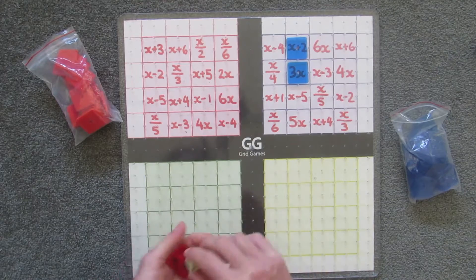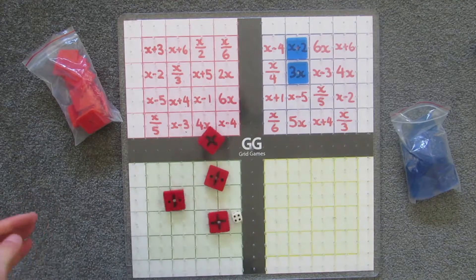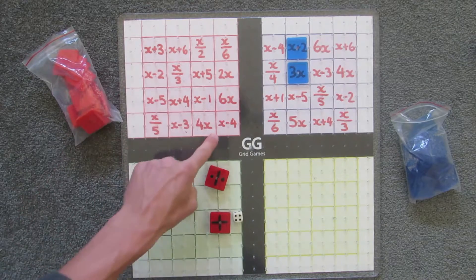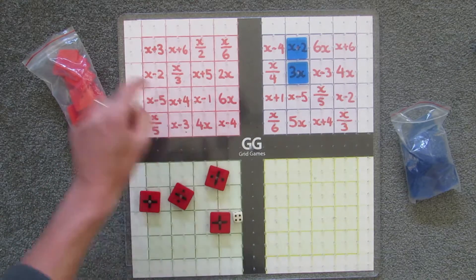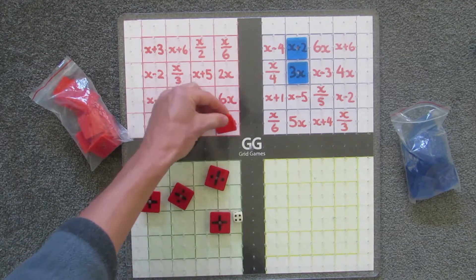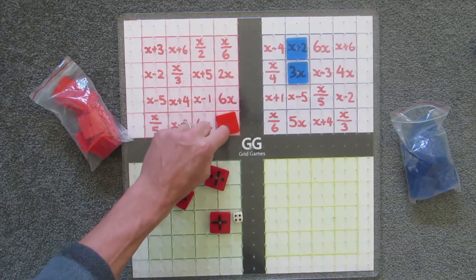So we'll go a few more just so you get the idea. So the next roll, plus 4. So if you have x minus 4, the plus 4 will undo that. So this time red does get one. Because if you add 4 to minus 4, you'll just have nothing but the x.